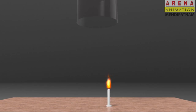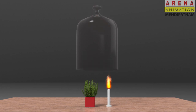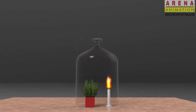Experiment 2. Light up the candle first. Place a mint plant beside the burning candle. Now keep the bell jar above both of them as shown in the video. The light of the candle continues burning without any interruption.